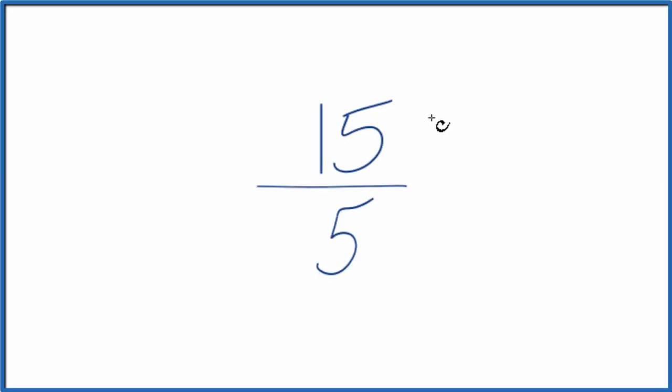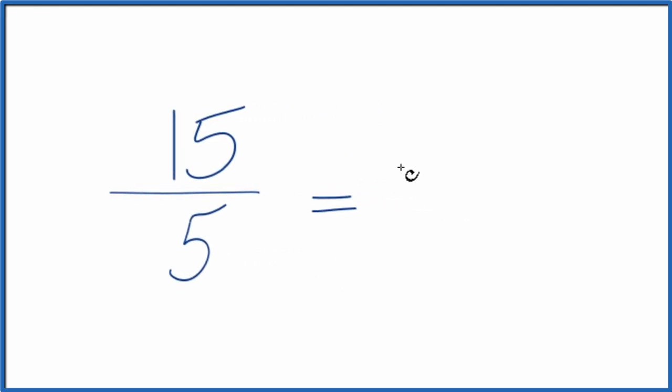If you need to simplify the fraction 15 fifths, here's how you can do that. So what we want to do is find another fraction that's equal, that's equivalent to 15 over 5, just that we've simplified or reduced it to lowest terms.